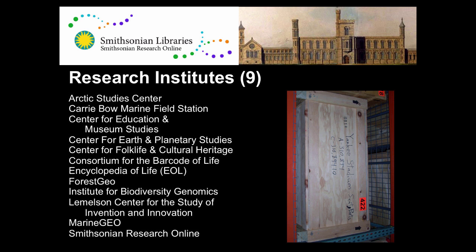We also have a number of research centers — this number should say 16 — and these are all the different study centers created at the Smithsonian to do very specific projects. All of these activities going through the museums, the research institutes, and the research centers are generating the type of research that we are collecting within the Smithsonian Research Online, and then distributing and making available through those different mechanisms.